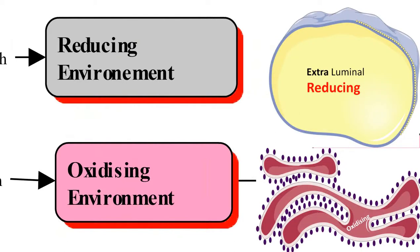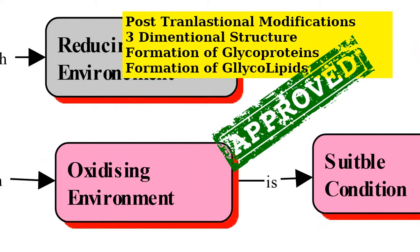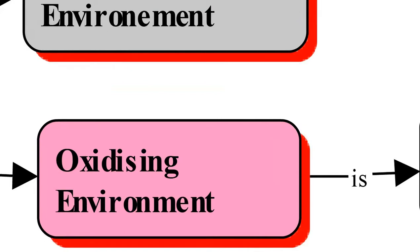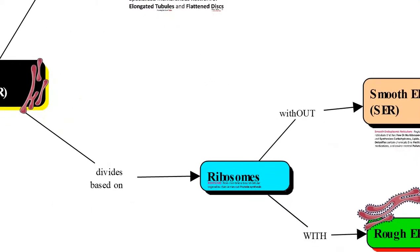The oxidizing environment inside the ER lumen facilitates post-translational modifications such as formation of disulfide bonds, folding of proteins into their three-dimensional structure, addition of sugar units to proteins, and addition of sugar units to lipids. In this way, the cell ensures that all activities required for post-translational modifications and lipid modifications are carried out within the ER.